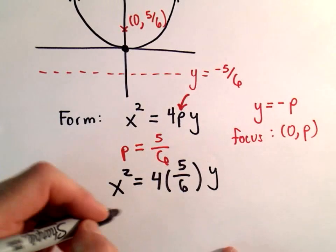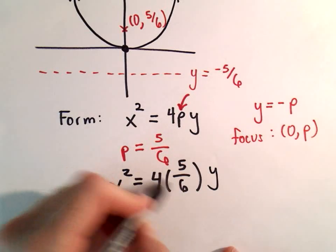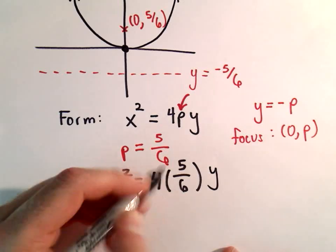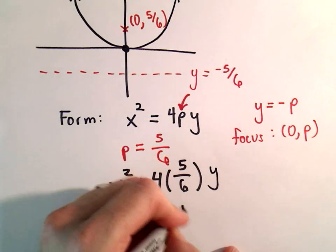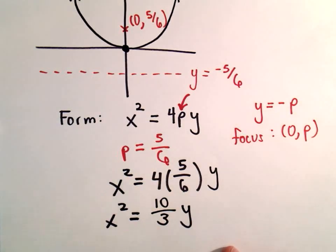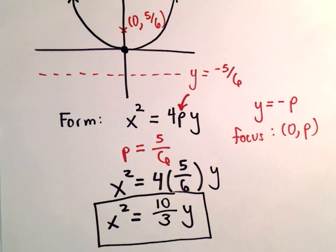And we can simplify this down a little bit. Let's see, 4 over 6 would reduce to 2 over 3. 2 times 5 would be 10. We would still have the 3 in the denominator. So it looks like we would get x squared equals 10 thirds times y, and that would be our equation.